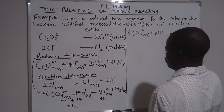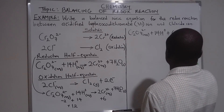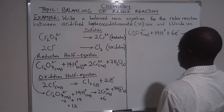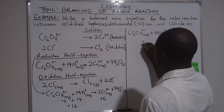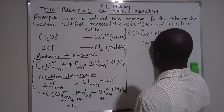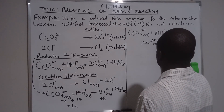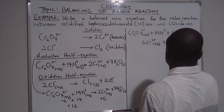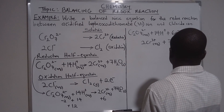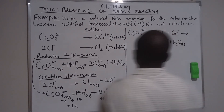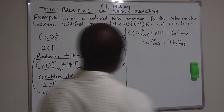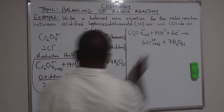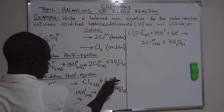So we use 6 electrons to balance the 12, giving us 2Cr³⁺ plus 7H₂O (liquid). At this point, the reduction equation has 6 electrons and the oxidation equation has 2 electrons.